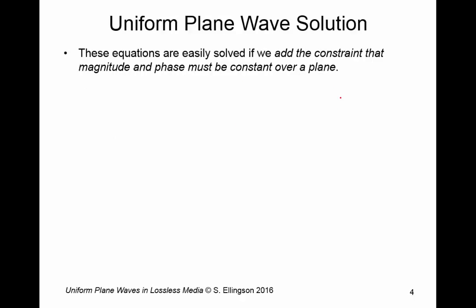These equations are easily solved if we add the constraint that magnitude and phase must be constant over a plane. And this is the definition of a uniform plane wave. In other words we take the equations and we also add the constraint, which you can think of as playing the role of a boundary condition in some sense, that the magnitude and the phase of the solution must be constant over a plane.